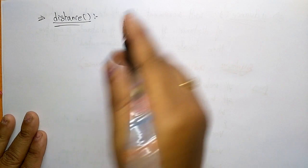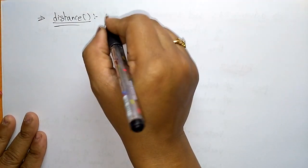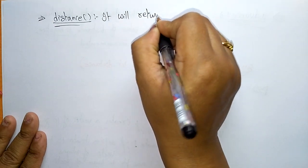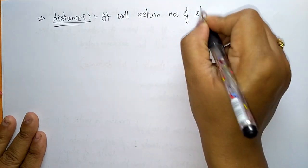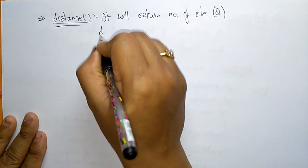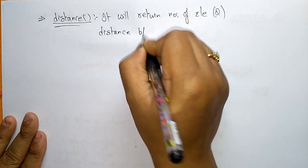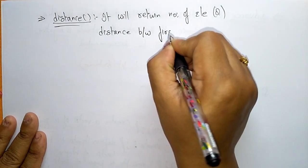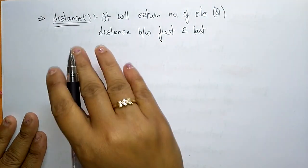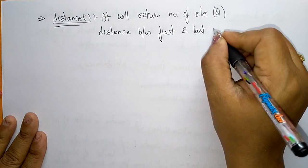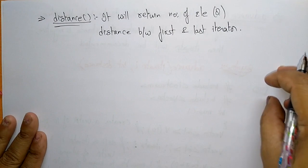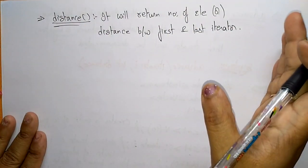Now let us see the distance operation. What is the use of this distance operator? The distance function returns the number of elements, or the distance between the first and last iterator. Both are the same — it just counts all elements between the first and the last iterator.